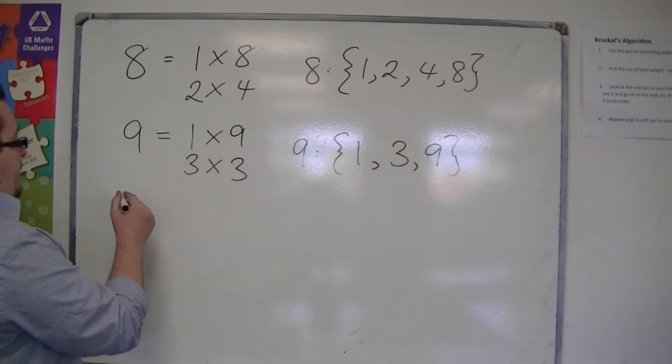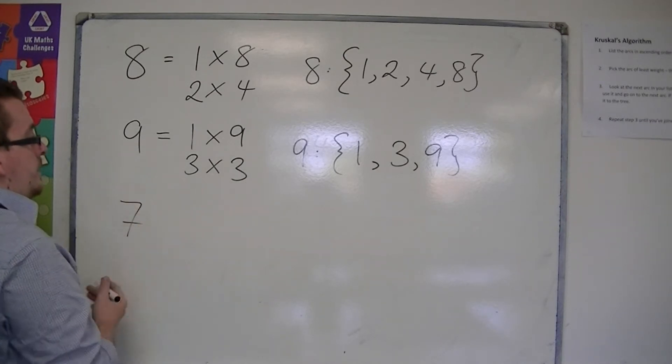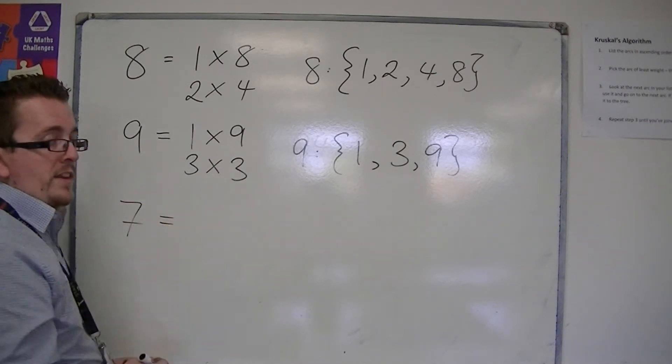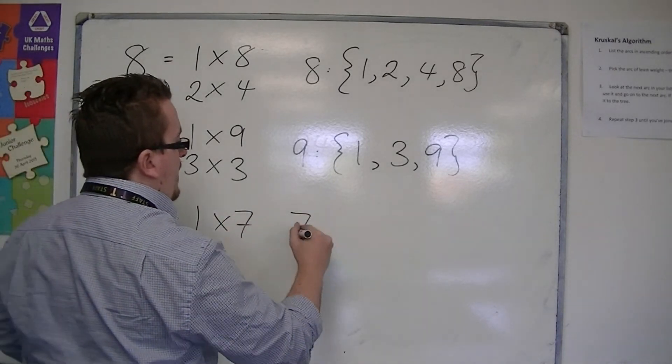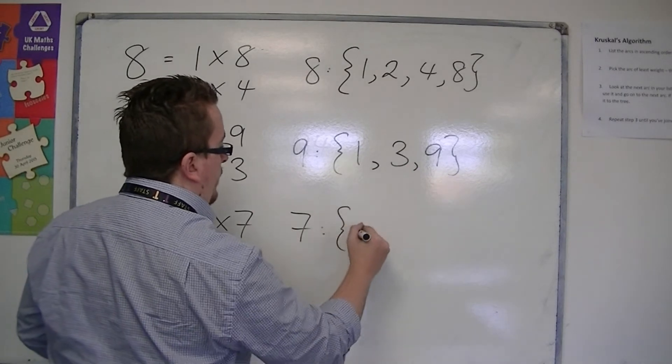If we were looking at 7, then there's only one way that we can make 7. So, 7 only has the two factors, 1 and 7.